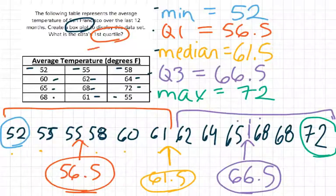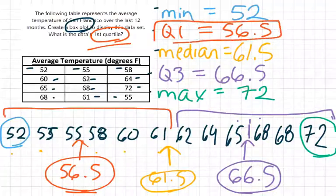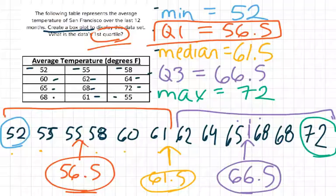I know my answer to my question, my first quartile is 56.5. But we were also asked to create a box plot. So we're going to go do that on the next page and I will show you how to do that.